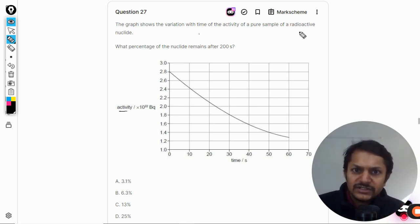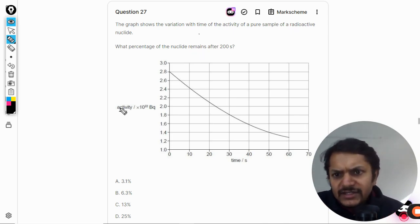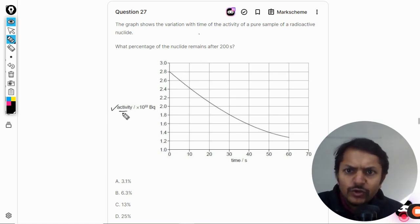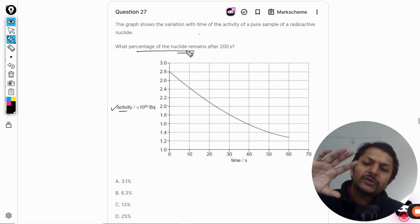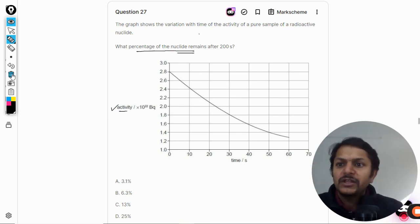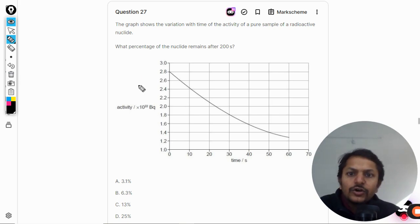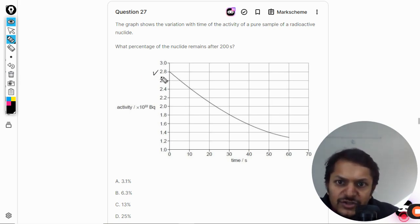It is talking about the activity. The graph has shown activity, but he is talking about percentage of the nuclei remaining, so we have to comment about the number of nuclei left. From the graph, it is evident that it is 2.8, starting with 2.8. It goes to 1.4, that is half.